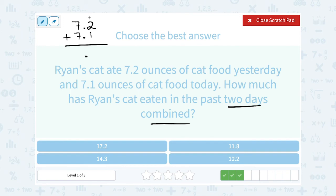Now notice I'm lining up my decimal points, and then I'm adding the numbers in each place value. So 2 plus 1 gives me 3 in the tenths place, and in the ones place, 7 plus 7 is 14. So that cat ate 14.3 ounces of food.